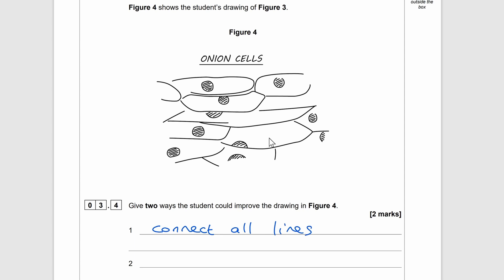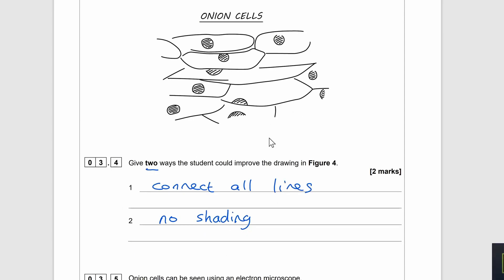So rules for drawing scientific images: there should be no unbroken lines, no shading, you should label anything that's in your diagram, include a scale or include the magnification. There should be no coloring, no sketching.